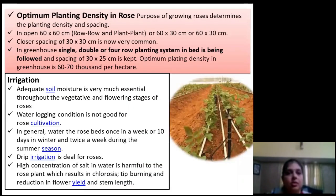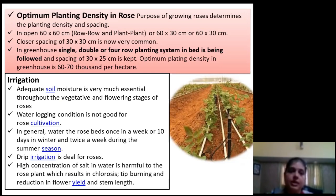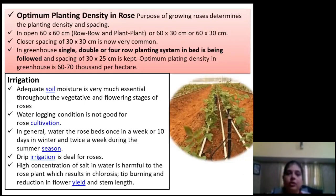Optimum planting density in rose: nowadays, rose is generally propagated under greenhouse conditions where single, double, or four row planting systems are followed with a spacing of 30 x 25 cm. The optimum planting density goes to 60 to 70 thousand plants per hectare. After planting, irrigation is very much essential for the vegetative and flowering stages. Water logging condition must be avoided in rose cultivation. Under summer season, irrigation should be given twice a week, but in winter, only once a week. Drip irrigation is ideal as water goes directly to the root zone and water use efficiency becomes high.